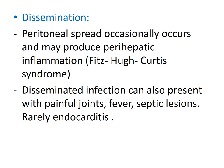Disseminated gonorrhea can occur; peritoneal spread occasionally produces perihepatic inflammation known as Fitz-Hugh–Curtis syndrome. Disseminated infection can also present with painful joints, fever, septic lesions on the skin, and rarely endocarditis. This is a picture of a septic lesion found on the skin of a patient with disseminated gonorrhea.